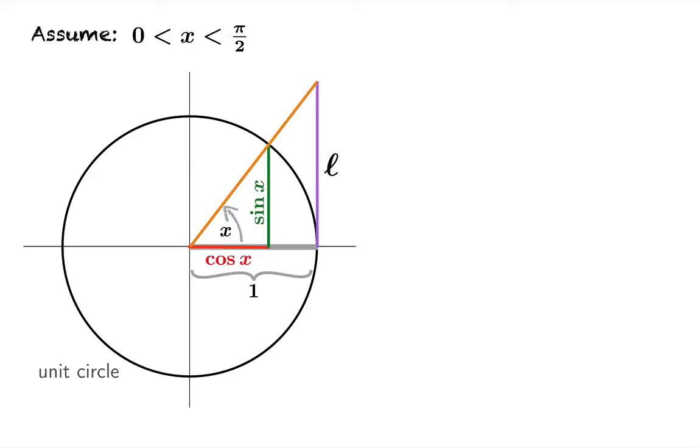Let's build out this tangent segment called the length L. And we'll notice a couple similar right triangles. So L is to one as sine is to cosine. Sine divided by cosine is just tangent. So in fact that length is tangent x.